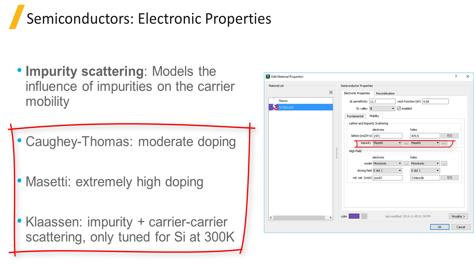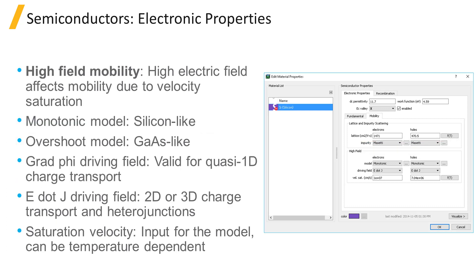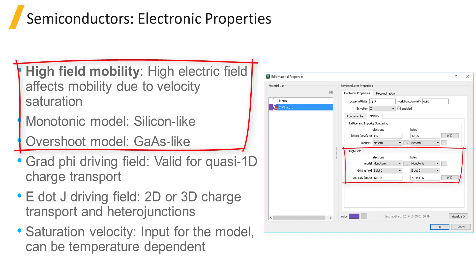Each model requires a variety of coefficients, and their default values are provided in the material database for most common semiconductors. For general modeling purposes, the Kage-Thomas or Massetti models are often sufficient, and coefficients are available for multiple semiconductor materials. The Klaassen model is primarily tuned for silicon at room temperature, and coefficients for other materials are not available. At moderate doping densities, the mobility predicted by the models reduces to that of the Kage-Thomas model. To account for extremely large doping concentrations, the Massetti model can be selected, which adds a correction to the Kage-Thomas model for large doping values.